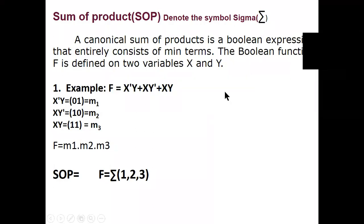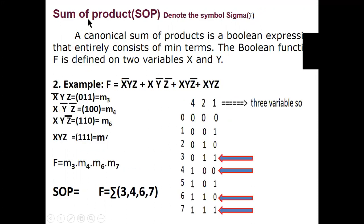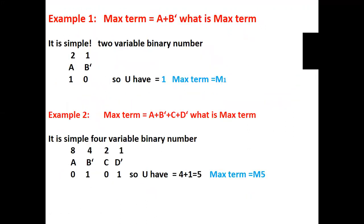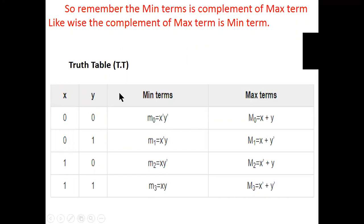Hello students. In this section we are going to see Sum of Product and Product of Sum conversion. In the last class we discussed Sum of Product. Sum of Product form consists of min terms, and Product of Sum consists of max terms. For two variables: zero-zero, zero-one, one-zero, one-one — that is zero, one, two, three.